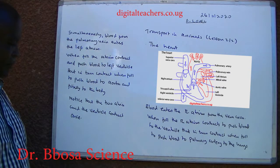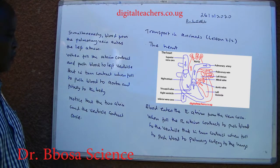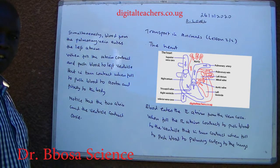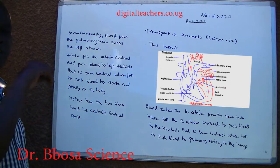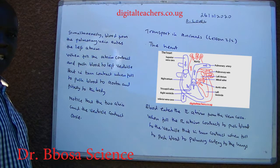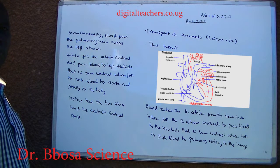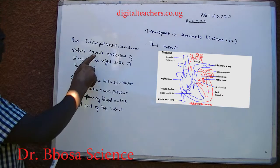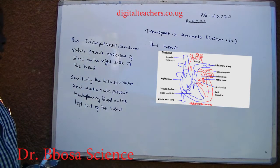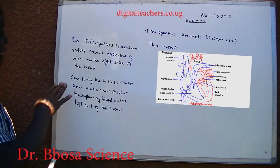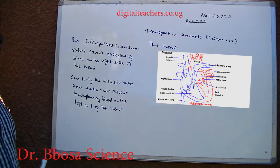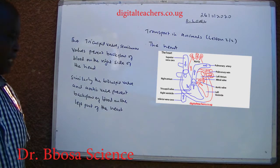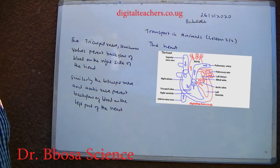Notice that the two atria and the two ventricles contract at once. The atria contract to push blood to the ventricles, then both ventricles contract to push blood to either the pulmonary artery or the aorta. The tricuspid valve and semilunar valves prevent backflow of blood on the right side of the heart. Similarly, the bicuspid valve and aortic valve prevent backflow of blood on the left side.